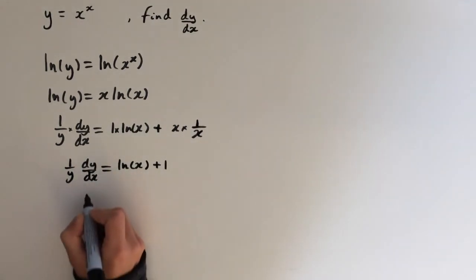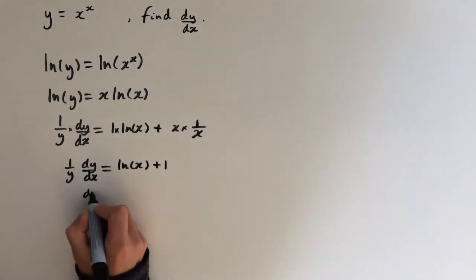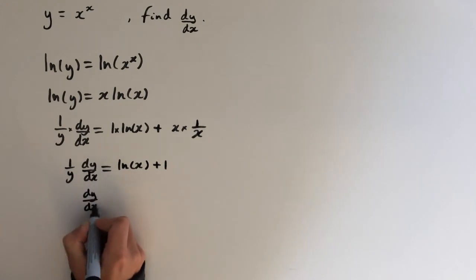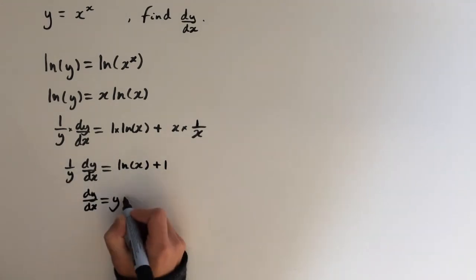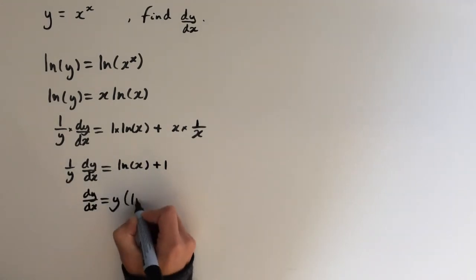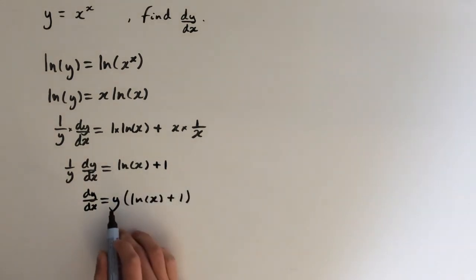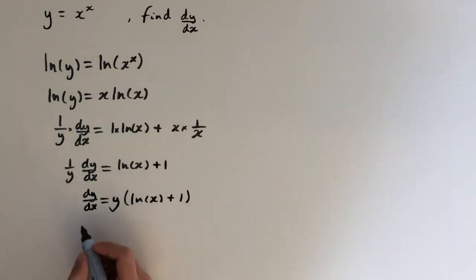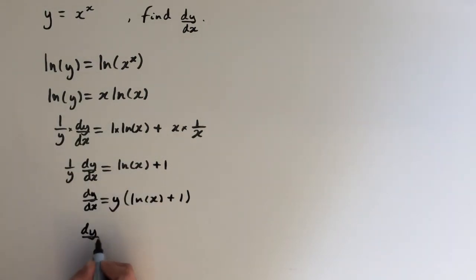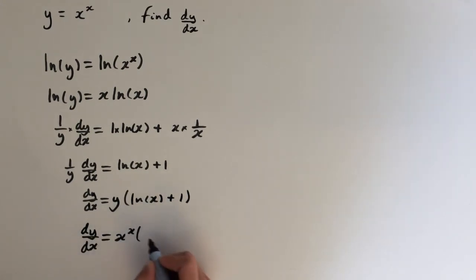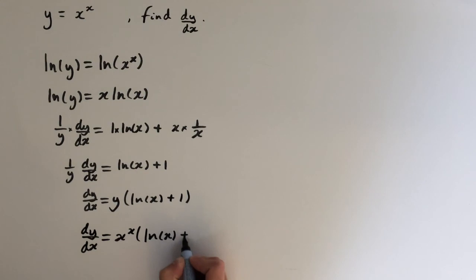So let's multiply both sides by y. So we get dy/dx equals y times (ln of x plus 1). And the last step is to substitute back in for y. So y equals x to the power of x, which means dy/dx equals x to the power of x times (ln of x plus 1).